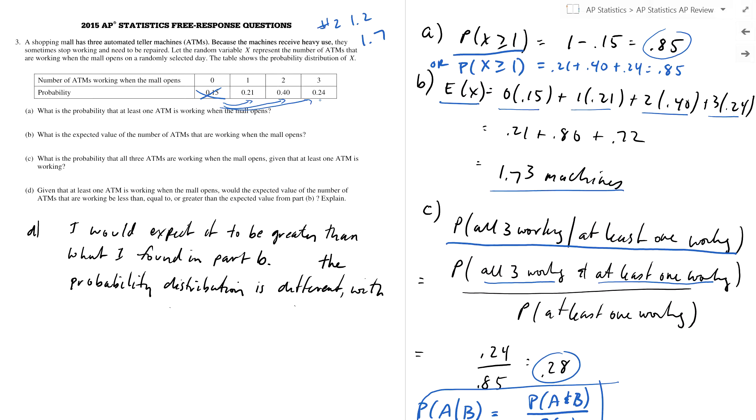So what's going to happen to the expected value? Well, these numbers, 21, 40, and 24, are each going to go up. So when I calculate the expected value now, is it going to be larger than this? Yeah, because these numbers will each be bigger. When you multiply one times it, two times it, three times bigger numbers, it'll be a bigger expected value.